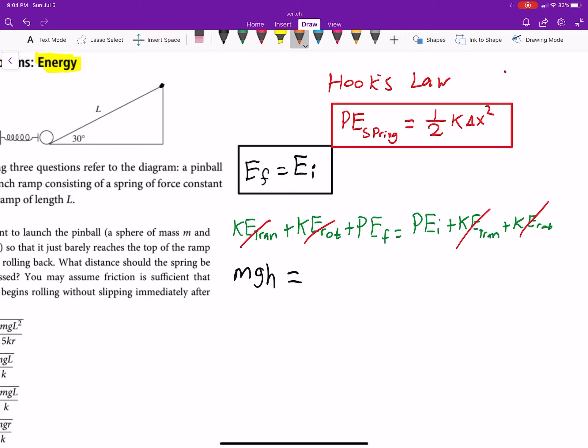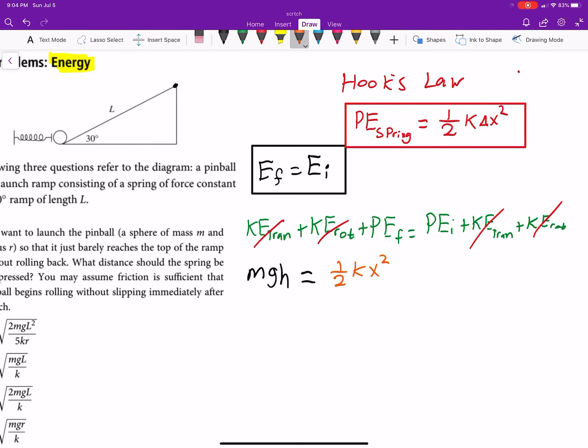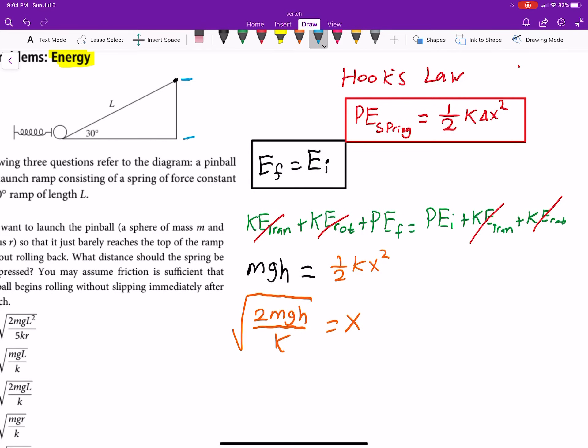Okay. So, one-half k x squared, where x is the distance the spring is either compressed or stretched from equilibrium. So, we want to solve for that. You get 2mgh divided by k square root equals x. Now, the height, that's your height h. This is opposite of our angle here, theta, which we know to be 30 degrees. So, the hypotenuse times sine of theta is equal to h. Sine of theta is opposite h over hypotenuse L. Multiply over by the L, you'll get that.